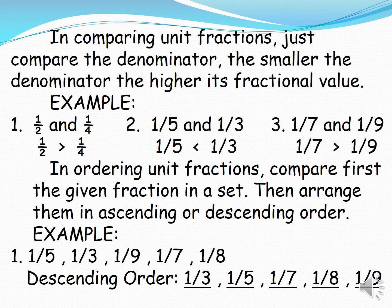In comparing unit fractions, just compare the denominator. The smaller the denominator, the higher its fractional value. Example number one: one half and one fourth. Two is less than four, so it has the higher fractional value. So one half is greater than one fourth. Number two: one fifth and one third. So one fifth is less than one third.